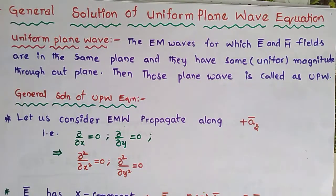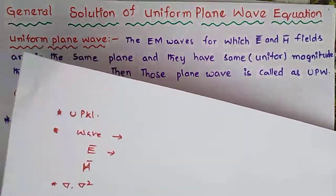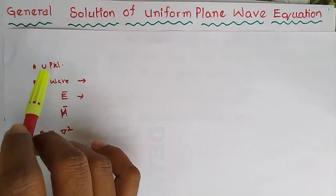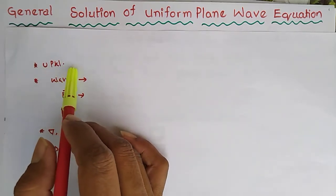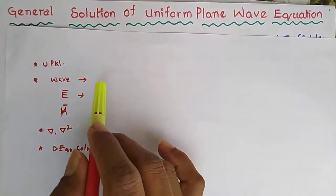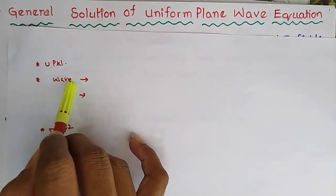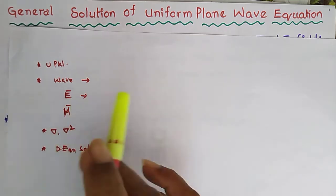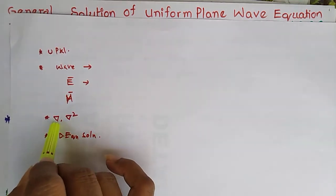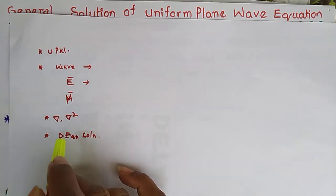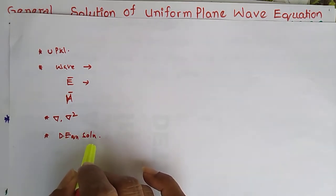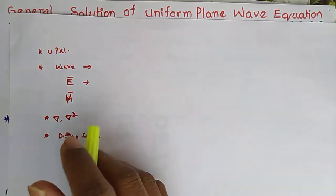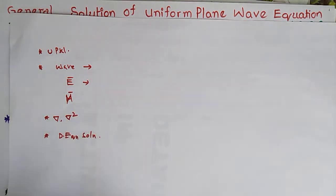So for this, I am giving the steps. The steps involve: first, the Uniform Plane Wave direction, then the electric field, the magnetic field, and the del-square operator. The differential equation solution is used to find out the general solution.